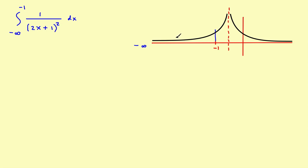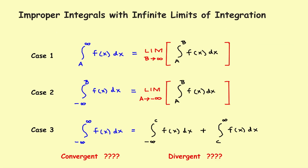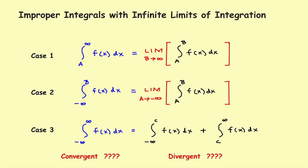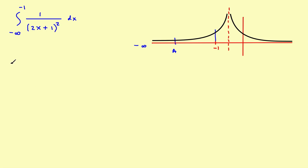To do this we're going to use a similar process to what we did before. We don't have a formula for an infinite limit, so what we'll do is make it a two-part problem. We'll do the black part in the middle: pick some fixed number a and evaluate a definite integral from a to b. Then we'll take the limit as a goes to negative infinity to get the overall integral. So somewhere off to the left we'll pick a fixed number a, and first evaluate this definite integral between a and negative one.